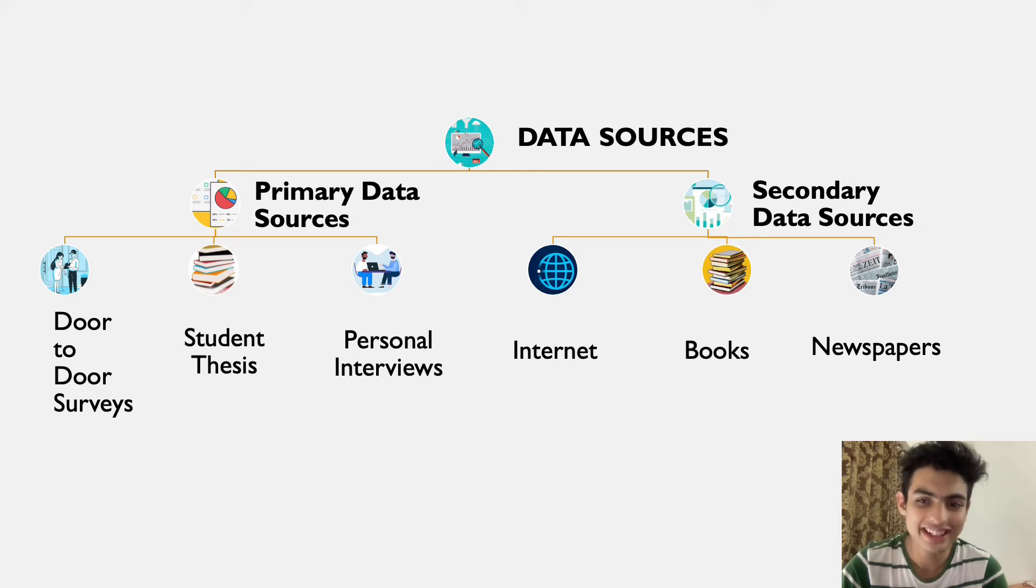So here is a little segregation of data sources. Within primary data sources, we have door-to-door surveys like census, student thesis like maybe a paper published on different efficiencies of engines, and personal interviews. Within secondary data sources, everything around us is included. Basically since COVID-19, the world got locked up and people started using digital media even more. The data available thanks to that can be categorized under secondary data sources. Internet, web pages, books, newspapers, all are examples of secondary data sources.